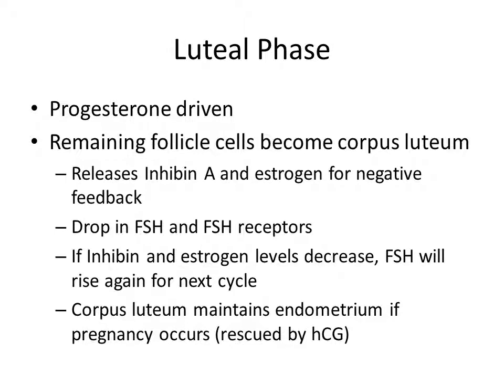The luteal phase is more progesterone-driven. The remaining follicle cells become the corpus luteum, which releases inhibin A and estrogen, causing negative feedback on GnRH and a drop in FSH and FSH receptors. As inhibin and estrogen levels decrease, FSH will rise again for the next cycle. The corpus luteum maintains the endometrium via progesterone, and if pregnancy occurs it is rescued by HCG.